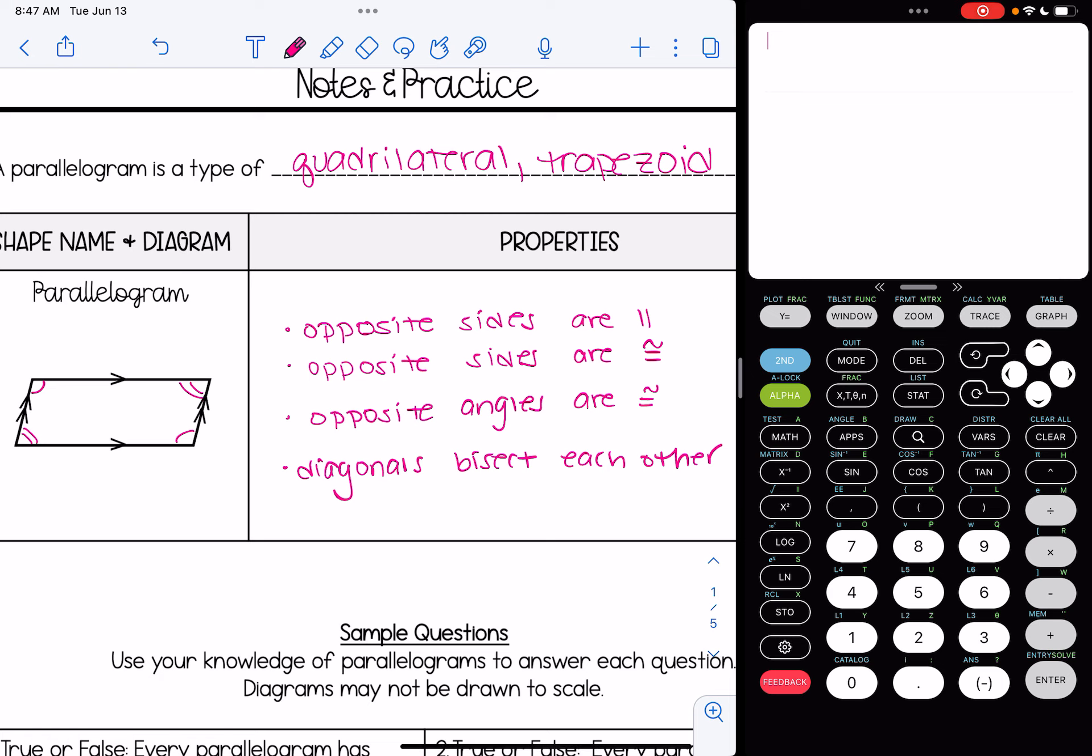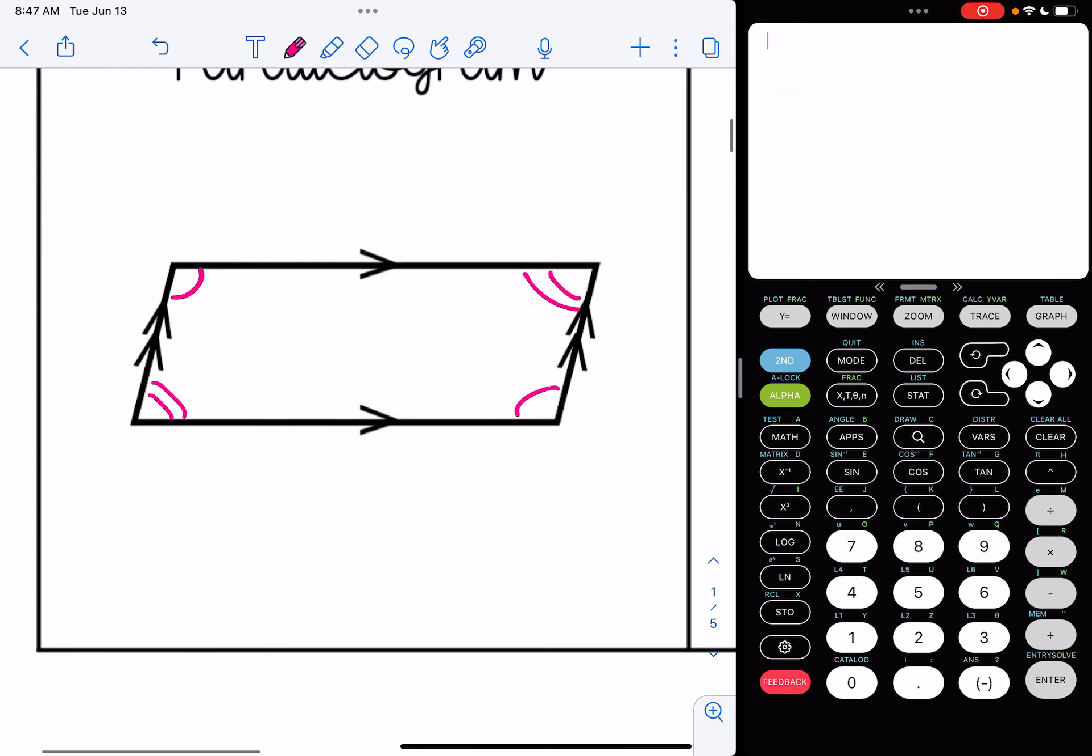And the last one is that the diagonals bisect each other. So if I zoom in on this picture here and I draw in the diagonals, if something is bisected, it is split into two congruent parts. So the first diagonal is split into two congruent parts. The second diagonal is split into two congruent parts. And in a regular parallelogram like this, the diagonals are not congruent. It's two from the first diagonal and two from the second diagonal.